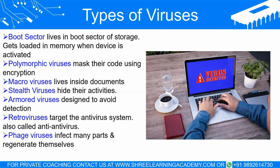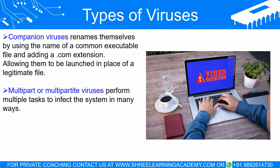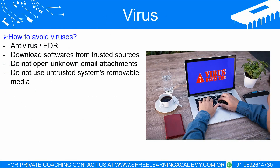Phage viruses modify or infect many parts of the system so that they can regenerate themselves from any remaining unremoved parts. Companion viruses rename themselves from the root name of a common executable file and put a .com extension at the end so that they can be launched instead of a legitimate file. Multipart or multipartite viruses can perform multiple tasks to infect the system in many ways. The best technology to avoid viruses is antivirus at the home level and EDR at the enterprise level, which are updated continuously and monitor all local storage devices, communication pathways, and memory from all viral activities. One more thing to keep in mind is that user behavior should be changed to avoid risky activities, because if we do not reduce the human risk, then no technical protection can save us.